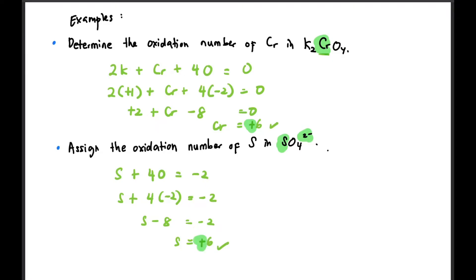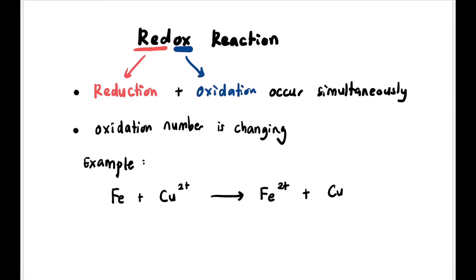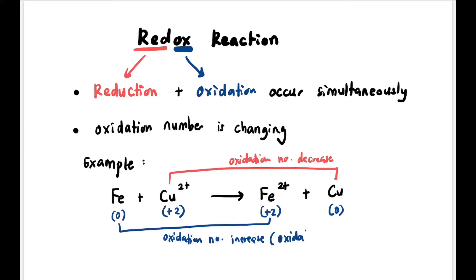Now let's learn what is redox reaction. Redox, as the name goes by, is a combination of reduction and oxidation where they occur simultaneously. In this case the oxidation number is changing - that is the sign of redox. For example, Fe + Cu²⁺ produce Fe²⁺ + Cu. For Fe, the oxidation number changed from 0 to +2, so oxidation occurred. Meanwhile for Cu, the oxidation number changed from +2 to 0, so reduction occurred.